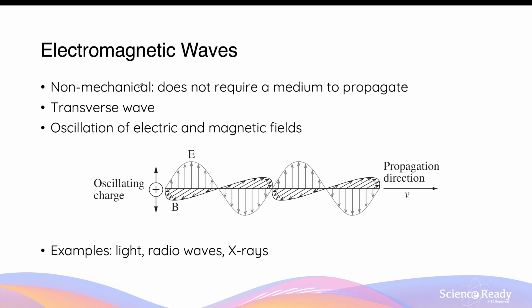In the very beginning of this video, we discussed that there are two types of waves: mechanical and electromagnetic. Electromagnetic waves are non-mechanical, which means they do not require a medium to propagate in. Electromagnetic waves are strictly transverse waves — they are never longitudinal. Electromagnetic waves consist of oscillation of electric and magnetic fields. The two fields oscillate perpendicularly to one another. The electric field, represented by the symbol E, oscillates up and down in the vertical direction, while the magnetic field, represented by the letter B, oscillates in the direction perpendicular to the electric field. The oscillation of both fields is perpendicular to the direction of the wave's propagation, which is why it's classified as a transverse wave.